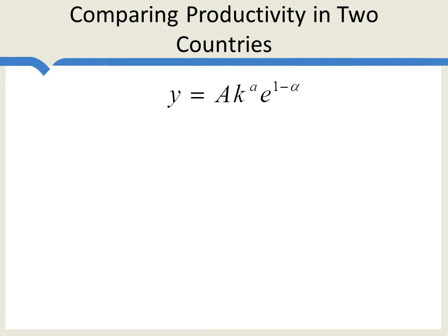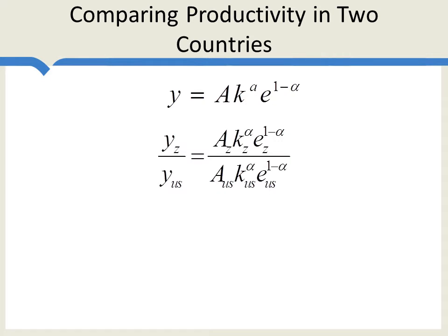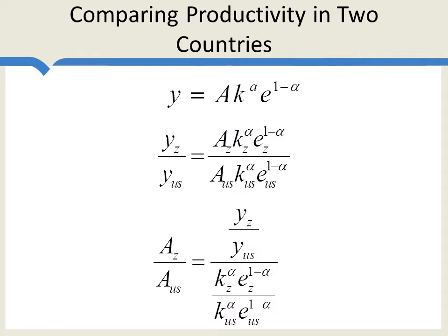Now let's compare the productivity level in two different countries. We begin with our equation from the last page and put two countries one on top of the other — Zambia or Zimbabwe on top, the U.S. on the bottom. What we want to do is divide both sides of the equation by the factors of production in order to isolate the productivity differences. Suppose that the output per worker in Zambia were half that in the United States. If the ratio of the factors of production were also half, then this would equal one, saying that the productivity levels in the United States and Zambia were the same.